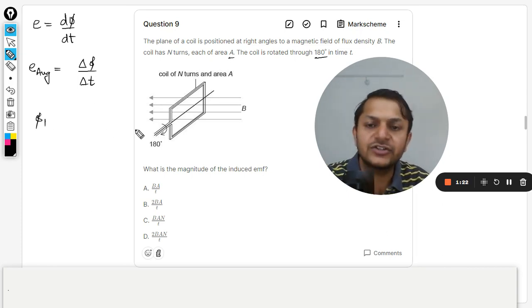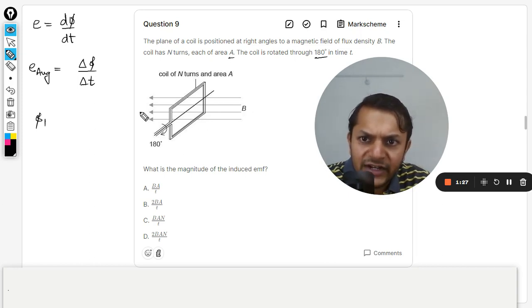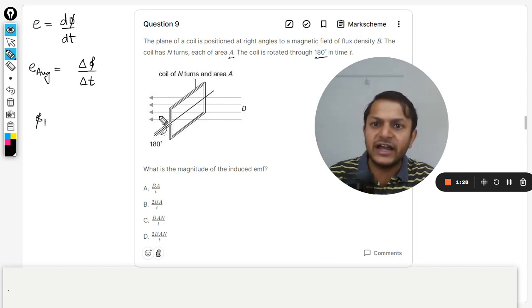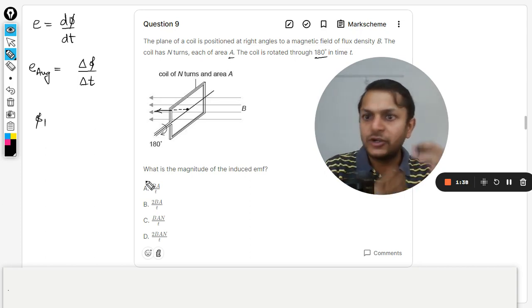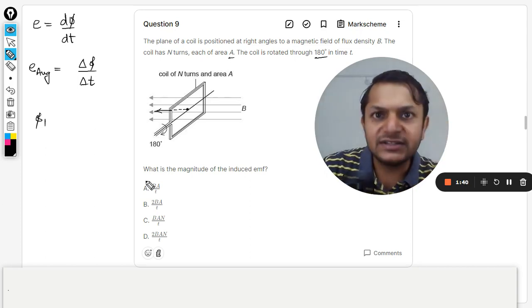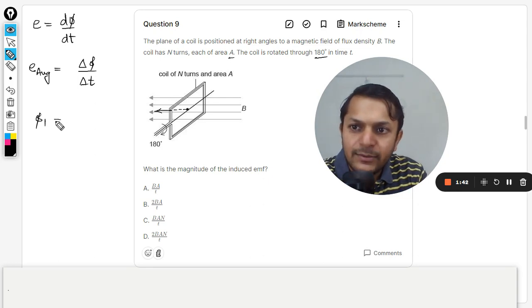So what is happening here is we are going to find the first flux. So first flux, the area is like this, so the magnetic field is towards the left-hand side. So I will say that the direction of the area is also towards the left-hand side.